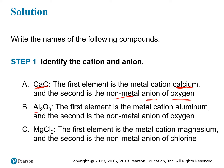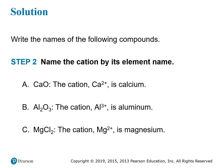In Al2O3, the first element is Al for aluminum — the metal cation — and the second element is oxygen, the nonmetal anion. In MgCl2, the first element, which is the metal cation, is Mg for magnesium, and the nonmetal anion is chlorine. Now we name the cations: Ca2+ is just called calcium, Al3+ is the aluminum ion, and Mg2+ is the magnesium ion.